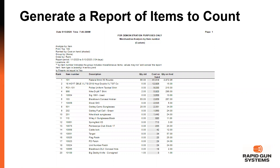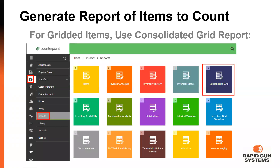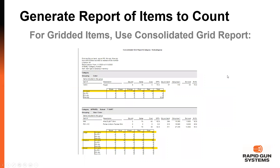One thing about this report is that it won't show any gridded items. If you have items in a grid — for example, shirts sold in small, medium, large, or different colors — you have to use the Consolidated Grid Report, found on the same screen as the Merchandise Analysis Report. This report breaks down the same style of information but for gridded items. Not everyone uses gridded items, but if you do have something like shirts in different sizes and colors, this is the report to use.